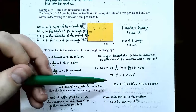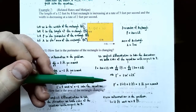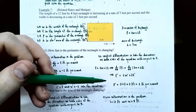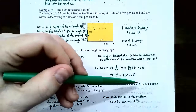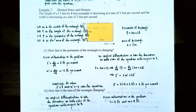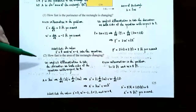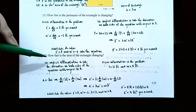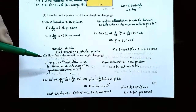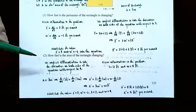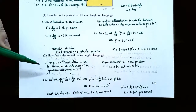So when the length is increasing by 3 feet per second and the width is decreasing by 2 feet per second, the perimeter is changing at 2 feet per second. Now for part 2: how fast is the area of the rectangle changing? We're still talking about the same rectangle — 12 feet in length and 8 feet in width.